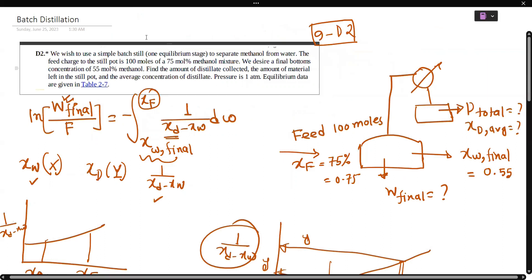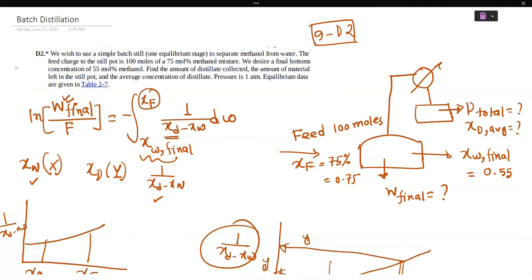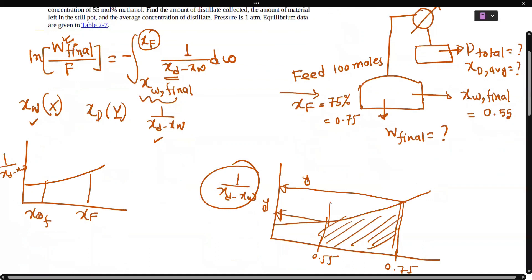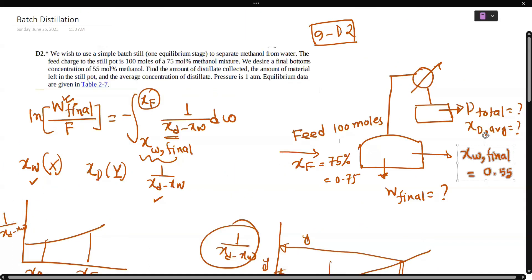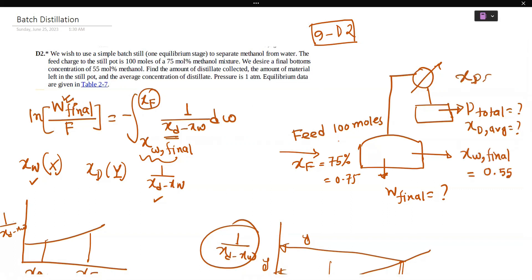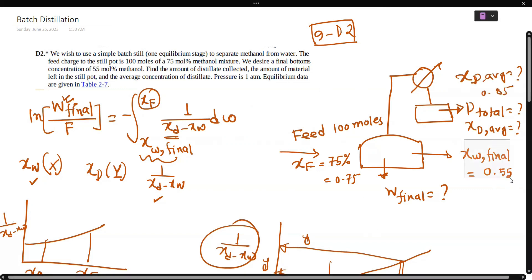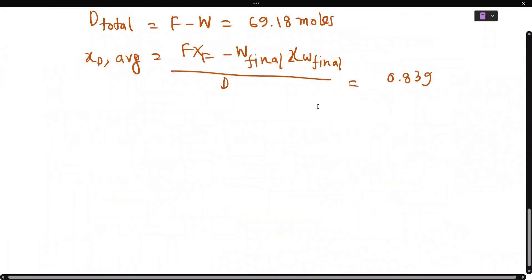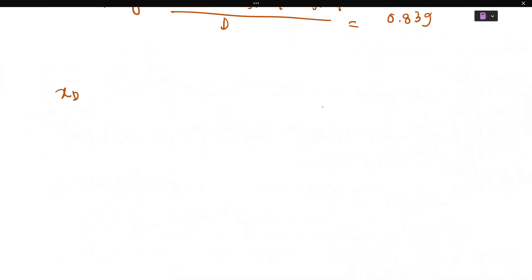From there you can find XD average. You can calculate F times XF minus W final times XW final divided by D, which gives 0.839. Because I have assumed XD two times, but this is a single step. Two times means your desired final bottom concentration is given as XW final. So if you are given XD average, something like 0.85, you can do this with XW final.